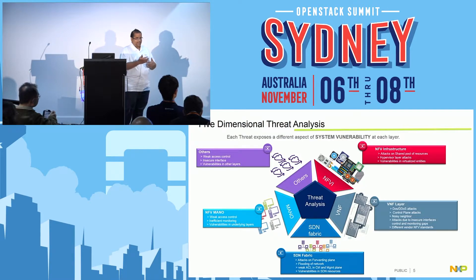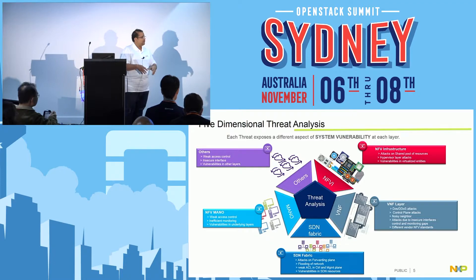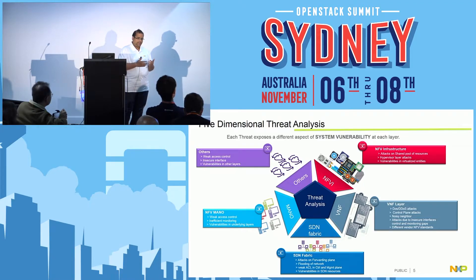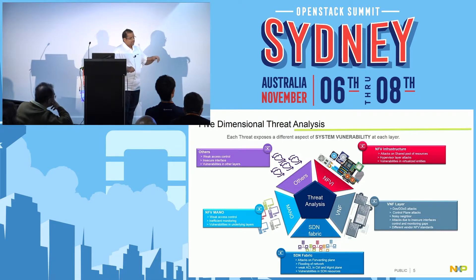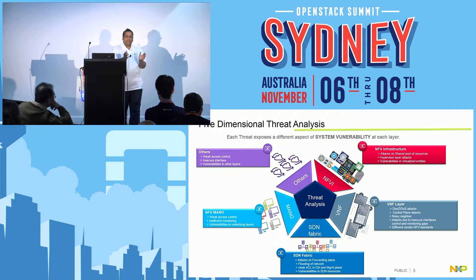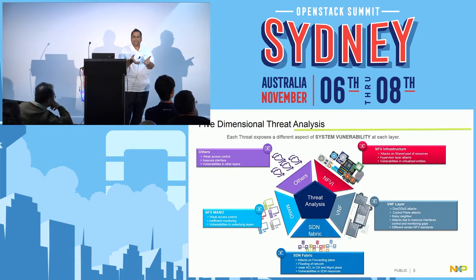Vulnerabilities in underlying layers such as VNFs or NFVI are weakening the MANO, making it prone to attacks. Additionally, weak VNF software or VNF packaging, MANO software, or SDN controller software is vulnerable to exploits, weakening the complete infrastructure. In this five-dimensional analysis, the key motivation is that each dimension doesn't just impact its own area — it impacts other existing areas as well, giving an attacker control over the complete cloud system.